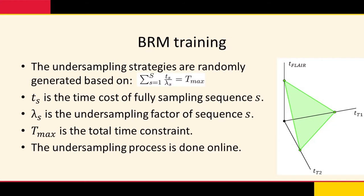Given a set of available sequences, their respective sampling times, and assuming Cartesian sampling, we can express all possible undersampling strategies with a simplex under a particular time constraint Tmax. At each iteration during training, we select a random strategy from all possibilities, use it to generate the corresponding undersampled sequences, and feed them to the BRM for training.